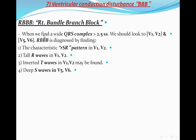Right bundle branch block. When we find a wide QRS complex more than 2.5 small squares, we should look to V1 and V2 on one hand, and V5 and V6 on the other. Right bundle branch block is diagnosed by finding a characteristic RSR pattern in V1 and V2, tall R wave in V1 and V2, inverted T waves in V1 and V2, and deep S waves in V5 and V6. The inverted T waves affect the right-sided recorder leads V1 and V2 in right bundle branch block.